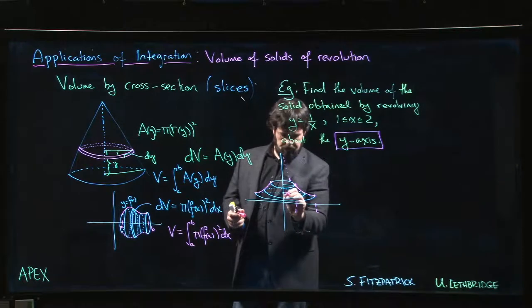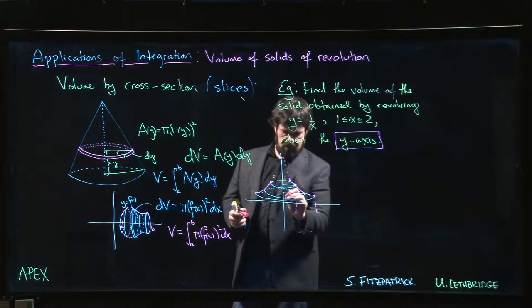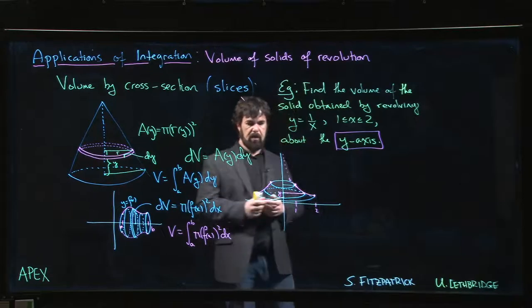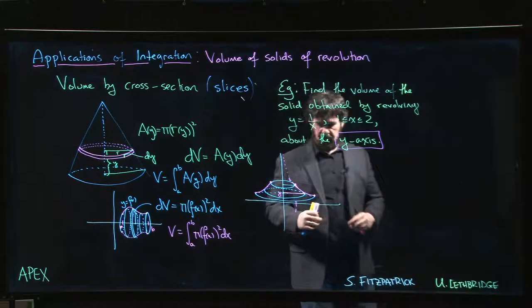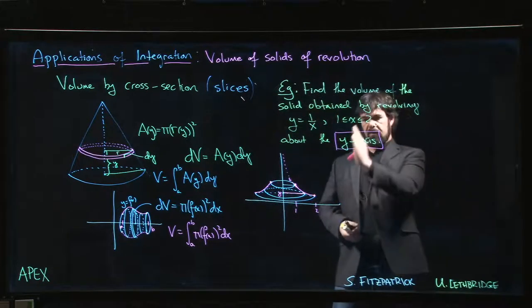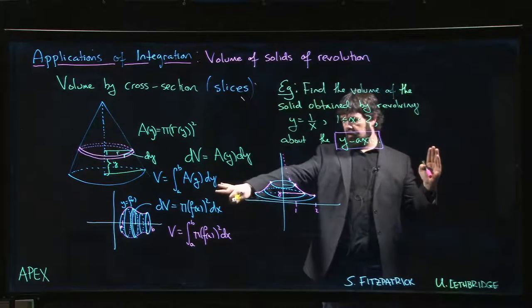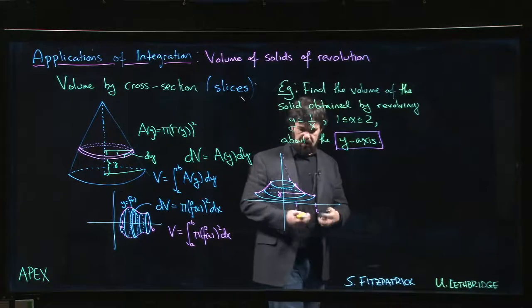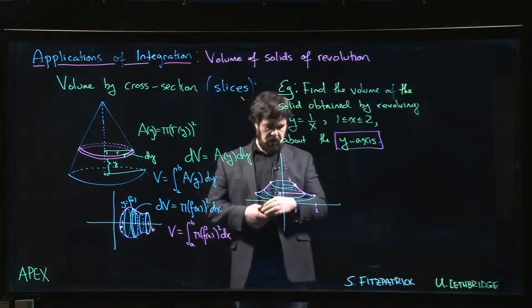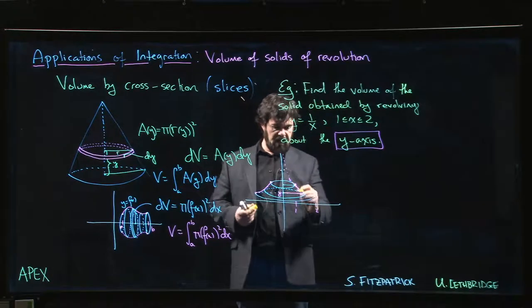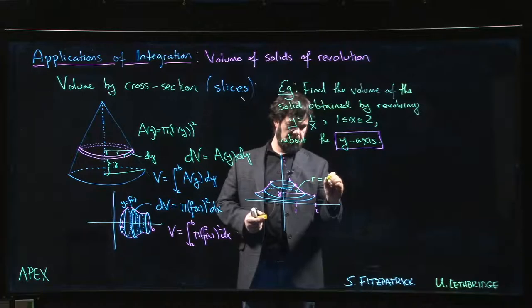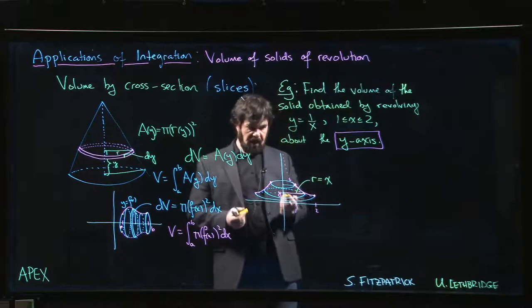This time here's the radius. Because we've oriented ourselves now vertically, we're revolving this way around. It's not quite the same as the picture that we had there, but we just have to change our perspective and realize that the radius of the circle here is now going to just be the x value, so radius is going to be x.